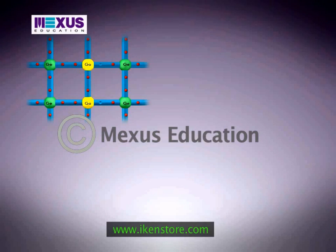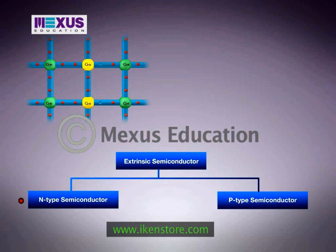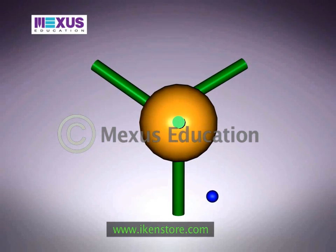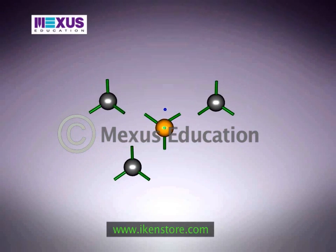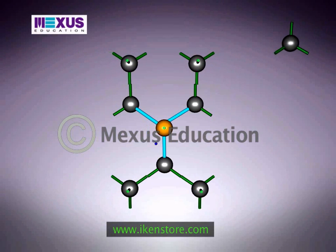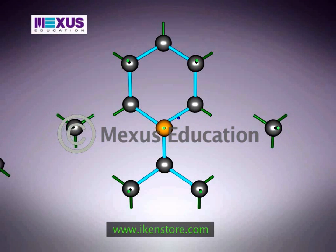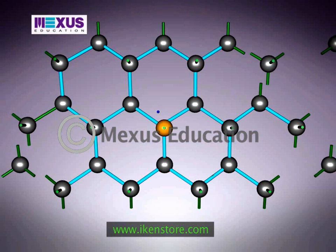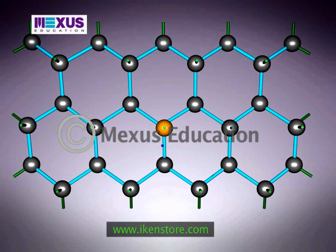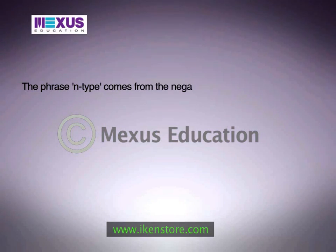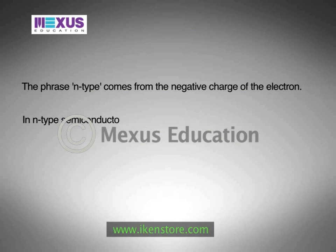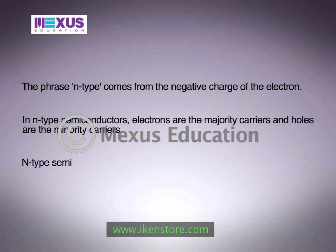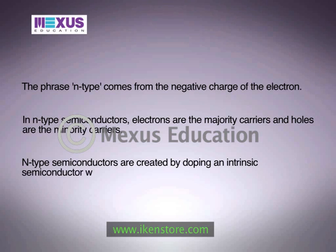Dominant carrier concentrations in an extrinsic semiconductor classify it as either an N-type or P-type semiconductor. N-type semiconductors: if a small amount of pentavalent impurity is added to an intrinsic semiconductor, then 4 of the 5 valence electrons form a covalent bond with the 4 valence electrons of the intrinsic semiconductor, and the 5th one will be available for conduction. This type of semiconductor, where electrons are the current carriers, is known as an N-type semiconductor. The phrase N-type comes from the negative charge of the electron. In N-type semiconductors, electrons are the majority carriers and holes are the minority carriers.